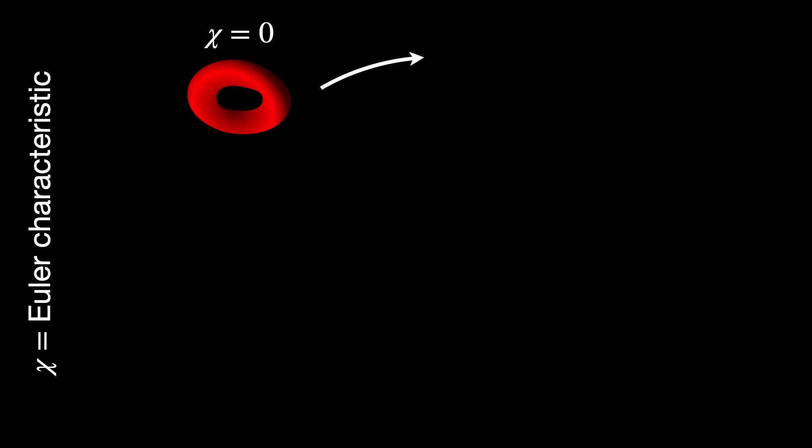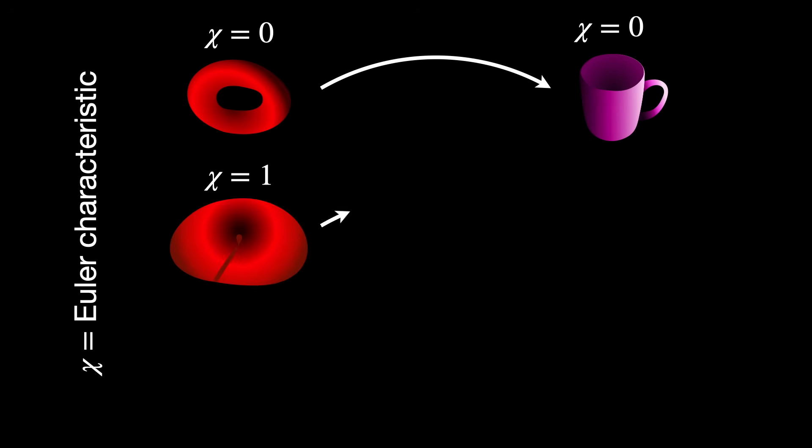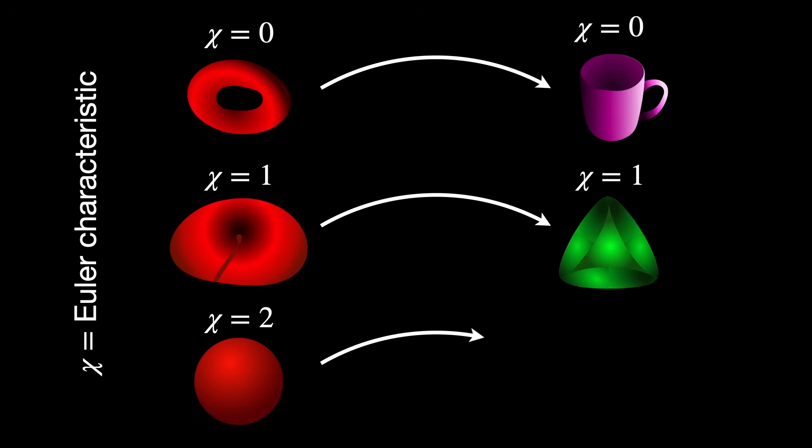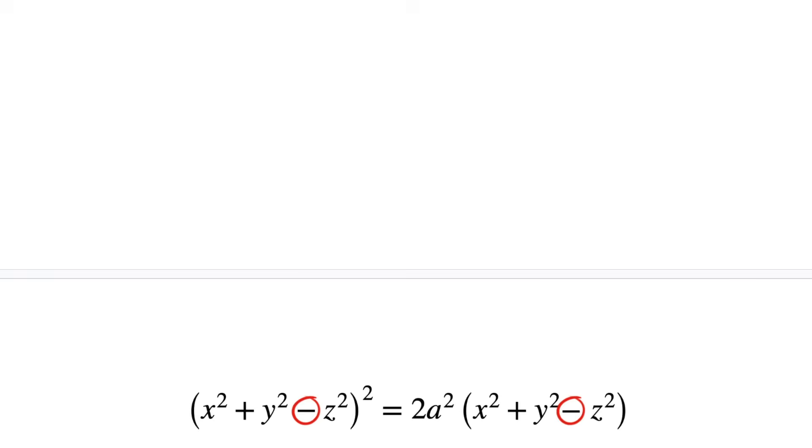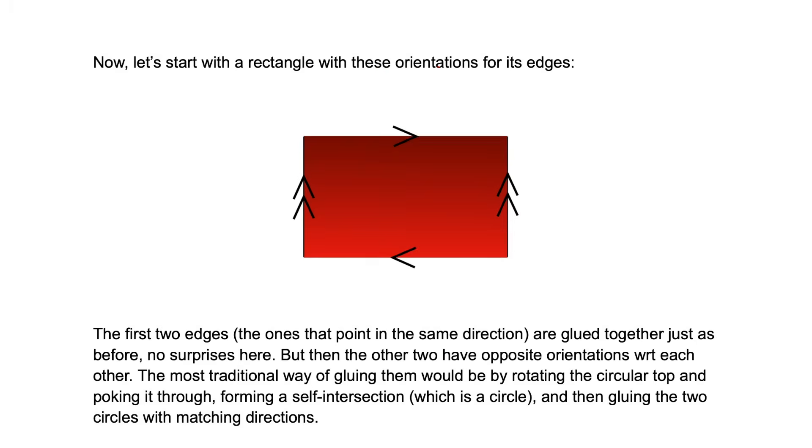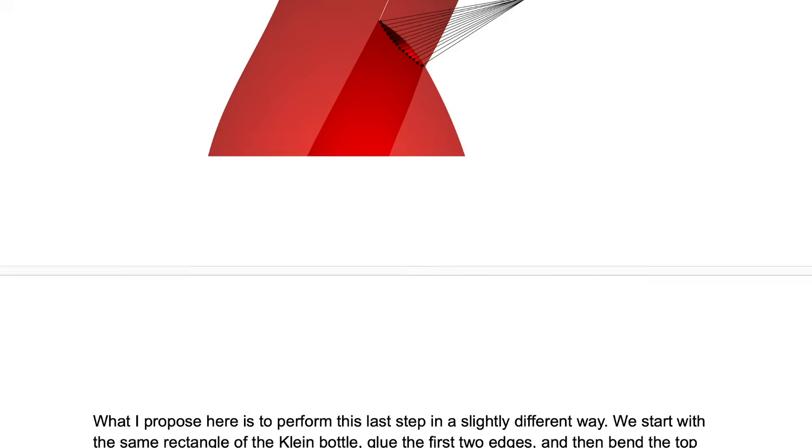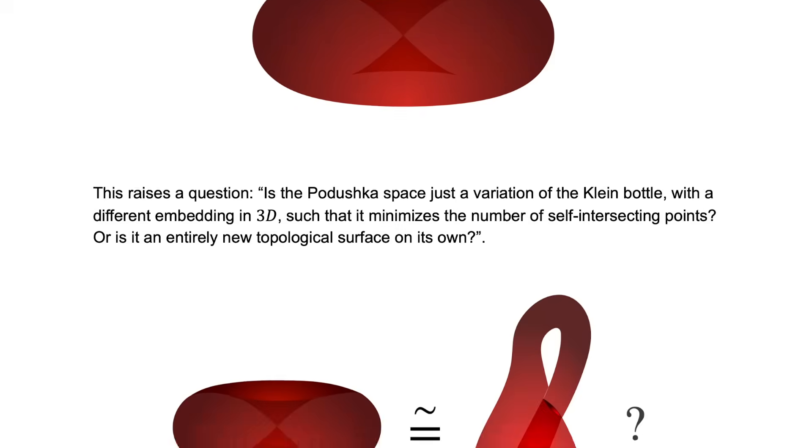The Euler characteristic is one of the most fundamental topological invariants and it is a number that is preserved under any kind of embedding or homeomorphic transformation. Basically, if two spaces are topologically equivalent to each other, they must have, among other properties, the same Euler characteristic, denoted with the Greek letter chi. The Euler characteristics of many fundamental surfaces are listed in the PDF link in the description that we did not have time to cover in the video. Check it out.